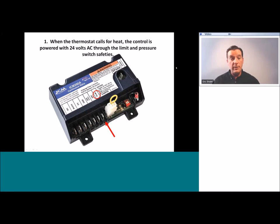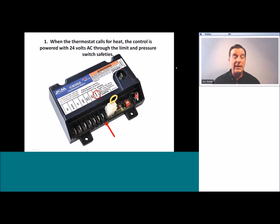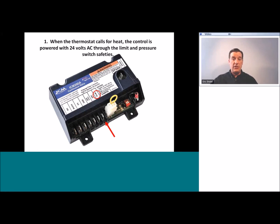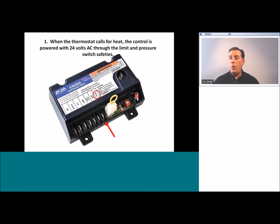The first thing you need to know about all intermittent pilot controls — and all circuit boards in general — is they do nothing until they are powered up, and they are powered up by 24 volts AC. This controller does nothing at all until there is a demand for heat, coming from the thermostat through the limit switches and pressure switch safeties, ending up at the THW connection. TH is short for thermostat. When we receive 24 volts on the TH terminal, the control wakes up and begins its sequence.